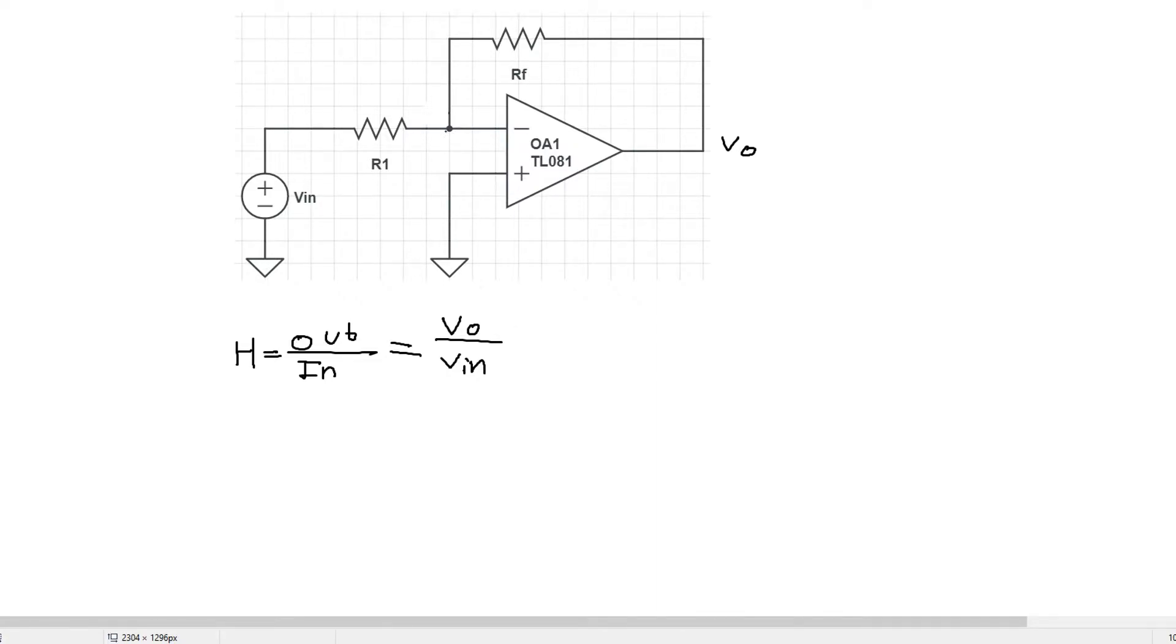Now let's write a nodal equation, a nodal voltage equation around this point. Let's call this point of the circuit A. So there flows a current from A down into the voltage source. So we write VA minus Vm divided by R1. That is the size of the current that flows from here down to ground.